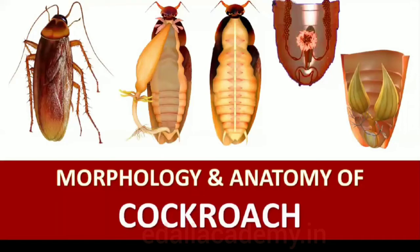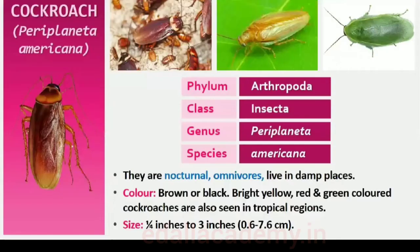Cockroaches are brown or black-bodied animals included in Class Insecta of Phylum Arthropoda. Bright yellow, red and green-colored cockroaches have also been reported in tropical regions. Their size ranges from 1/4 inches to 3 inches (0.6 to 7.6 centimeters) and they have long antennae, legs and a flat extension of the upper body wall that conceals the head. They are nocturnal omnivores that live in damp places throughout the world. They have become residents of human homes and thus are serious pests and vectors of several diseases.